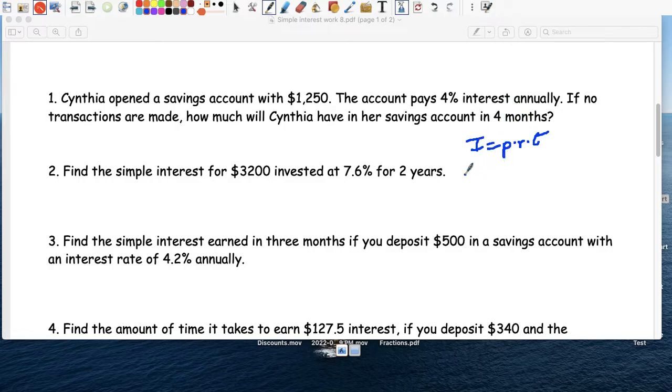Right, so the simple interest is how much interest you would earn if you leave $3,200 at a bank at 0.076 for a period of 2 years. So the amount of money that you would earn times 0.076 times 2 would be $486.04.